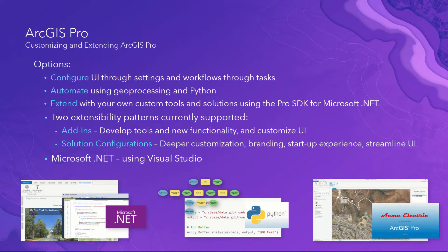Let's talk about ArcGIS Pro. You can configure ArcGIS Pro — its UI, settings, and workflows — without writing a single line of code. You can also automate it using geoprocessing in Python, and extend it with custom tools and solutions using the ArcGIS Pro SDK for Microsoft .NET. There are two extensibility patterns: add-ins, a familiar pattern many have used with ArcMap for years, and solution configurations, which give you a deep ability to brand the startup experience of ArcGIS Pro and streamline the UI.